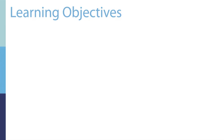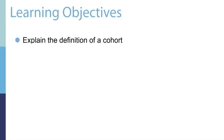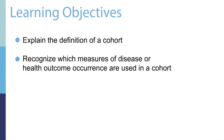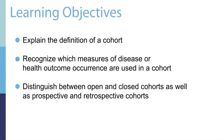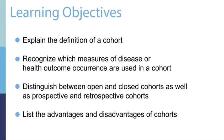In this segment, we will cover the following learning objectives: first, to explain the definition of a cohort; next, to recognize which measures of disease or health outcome occurrence are used in a cohort study design; to distinguish between open and closed cohorts as well as prospective and retrospective cohorts; and lastly, to list the advantages and disadvantages of cohort studies.